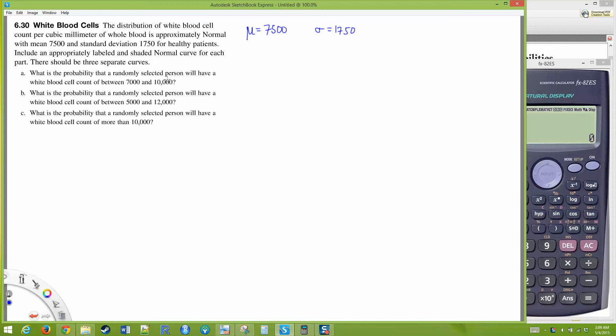What's the probability that a randomly selected person will have a white blood cell count between 7000 and 10,000? Let's work through problem A.